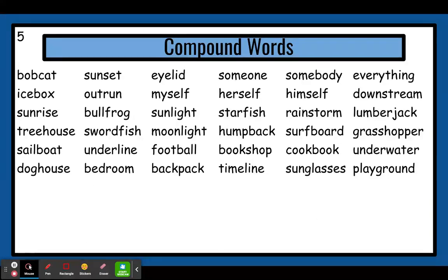Okay, review real quick. Compound words are when you have a word and another word — you put them together to make a new, bigger word. And you can figure out what that bigger word means by looking at the two parts. Very nice work today. See you next time.